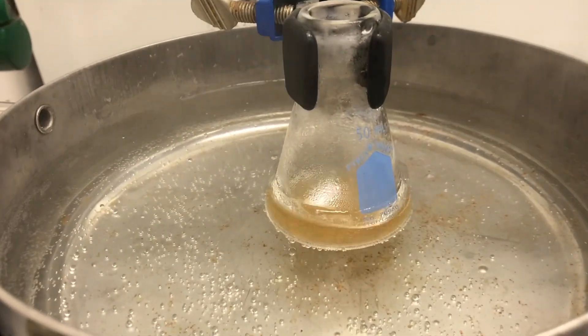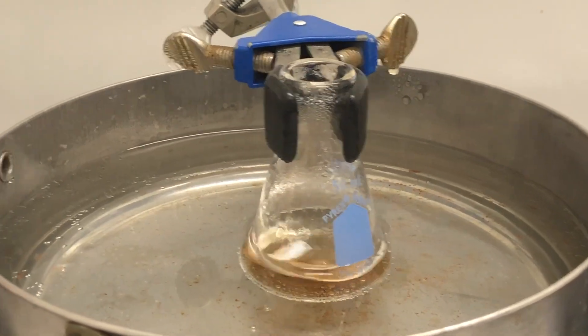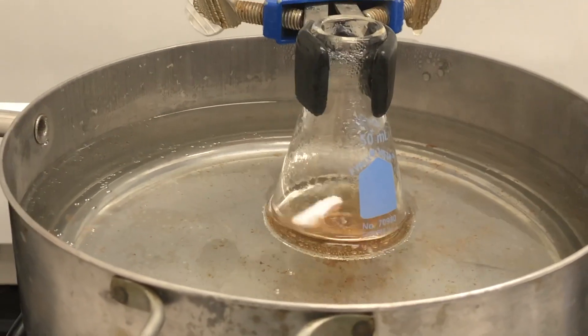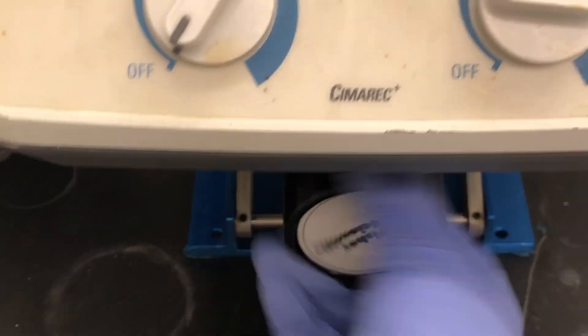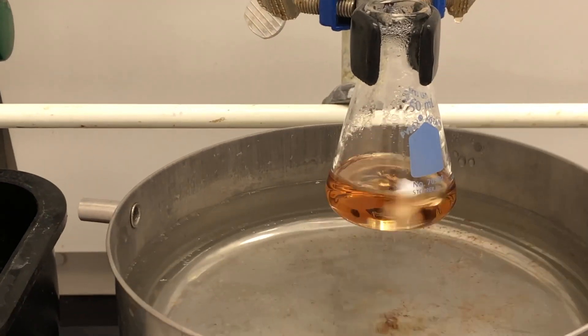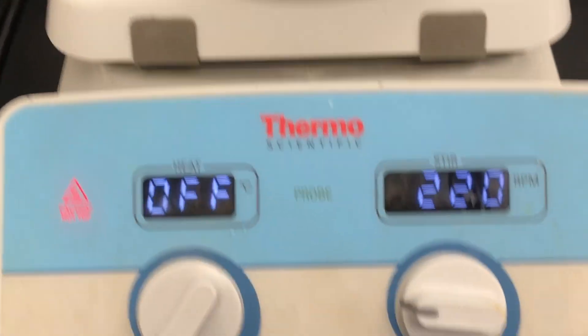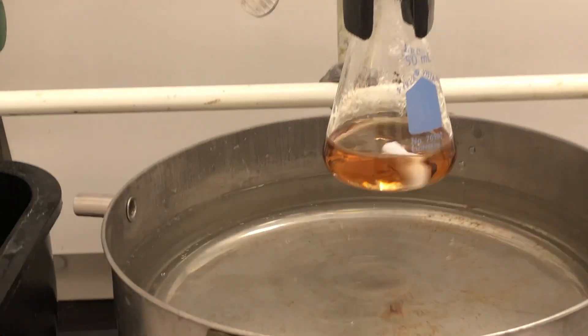Now, once I've let it sit in the hot water bath for about five minutes, I'm going to go ahead and turn off the heat source as well as lower the jack, basically removing it from the heat source. Notice the stir bar is still on, so I'll turn it off right now.